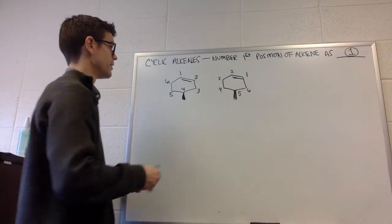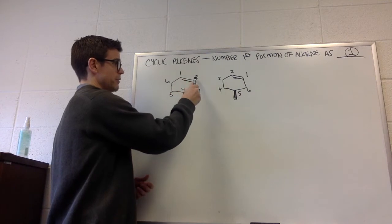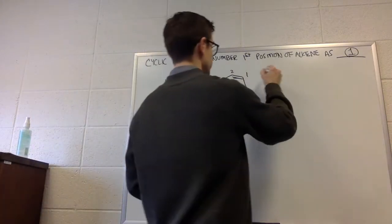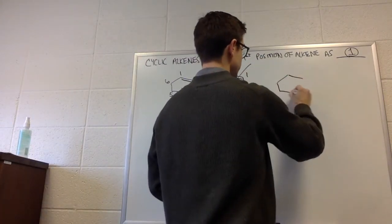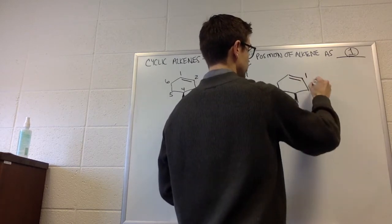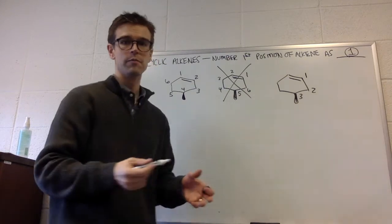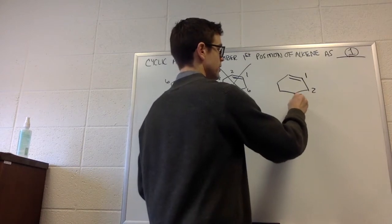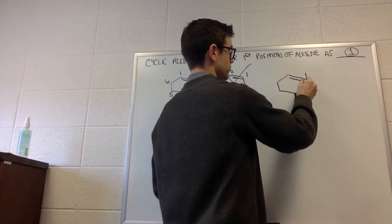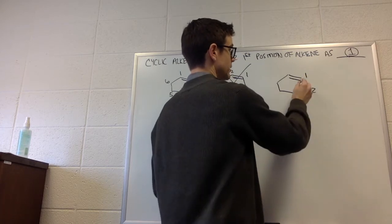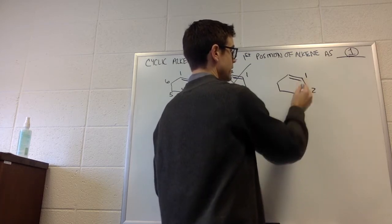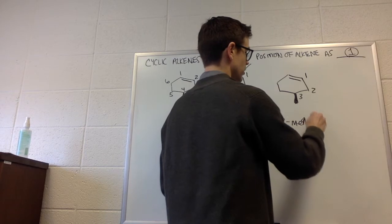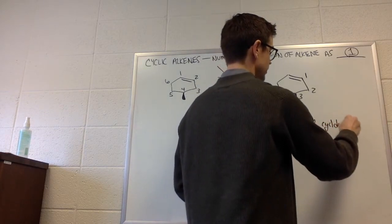One thing also to note is that position one always has to be followed by the second of the two alkene positions. So we can't number like this—this is bad. We also can't number like this, one, two, three, because the person trying to understand what you're naming is going to assume that if it's a cycloalkene and you say one, they're assuming that the alkene is between positions one and two. But if you said three methyl cyclohexene,